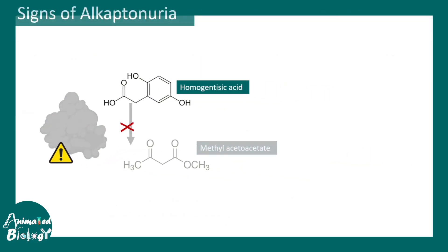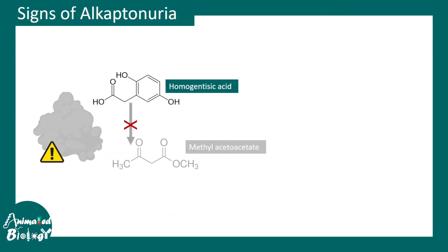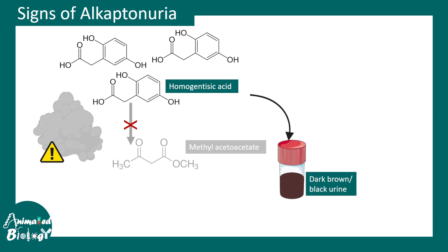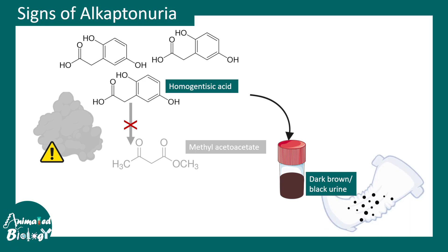When homogentisic acid builds up, it can eventually be excreted in the urine, leading to a pigmented color in the urine — the urine becomes dark brown or black. This can also be seen as a black stain on the diapers of babies who have alkaptonuria.